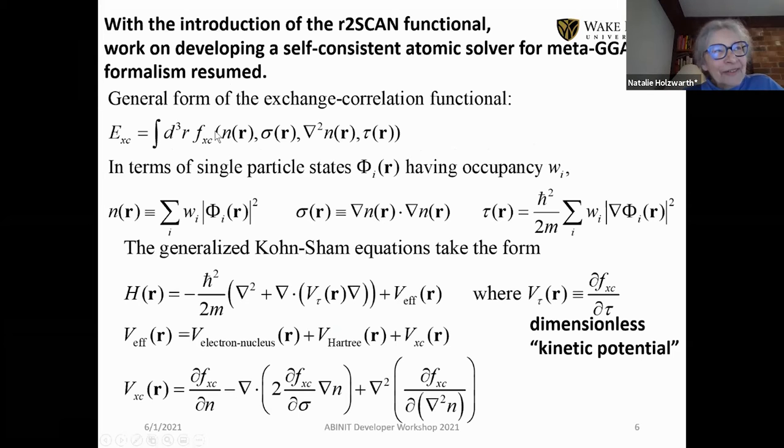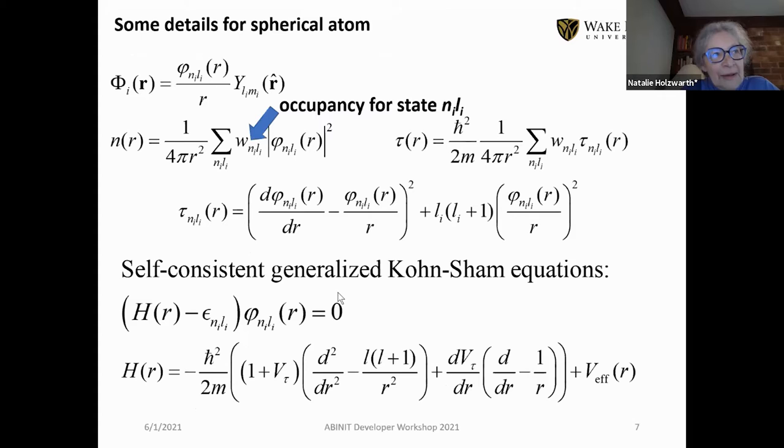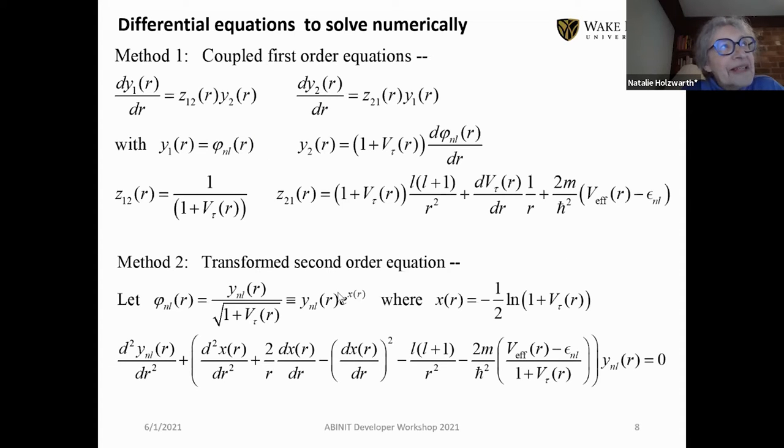But when R2SCAN was developed, this problem was solved. Mark told you about the form of the exchange correlation functional. It depends on the kinetic energy and introduces this dimensionless kinetic potential that comes into the kinetic energy solver differential equation. The question is, how can we implement that? We're implementing it for an atom with spherical symmetry. Am I still connected?